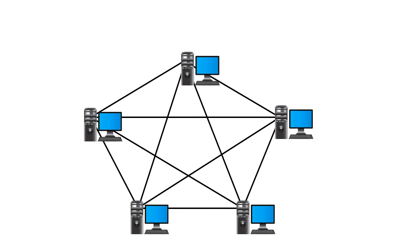Let us talk about the benefits of mesh topology. In case of any failure or interruption of connection, it can be easily identified the exact cause of fault for that interruption, and that fault will not stop the communication of the whole network. The interruption will only be limited to the faulty area. For example, if the cable connected between PC1 and PC2 has faltered, then only those two computers will not be able to send data between each other, but other nodes will remain actively connected. Mesh topology is quite secure, as all connecting ports are dedicated with point-to-point connections, so unauthorized access of traffic is restricted.